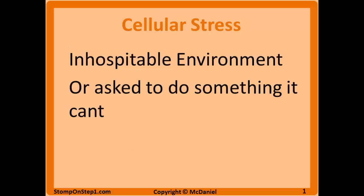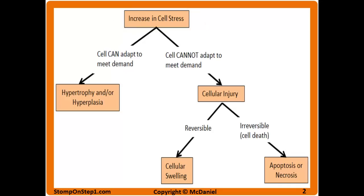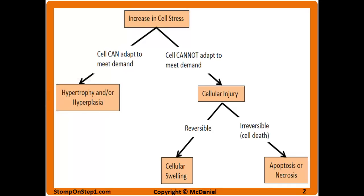Cellular stress is when an individual cell is placed in an inhospitable environment or asked to do something that it currently can't do. This causes the cell to either die or adapt to the new situation so it can better handle what's going on. When there's an increase in cell stress, cells can often meet this new level of demand by going through hypertrophy or hyperplasia. However, if the cell cannot meet the new level of demand, it will undergo cell injury.